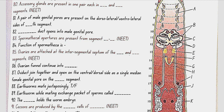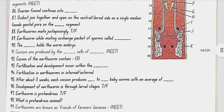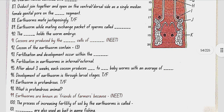Spermathecal apertures are present from segments 6 to 9. Function of spermatheca is to receive and store spermatozoa during copulation. Ovaries are attached at the intersegmental septum of the 12th and 13th segments. Ovarian funnels continue into oviducts which join together and open on the ventral side as a single median female genital pore on the 14th segment. Cocoons are produced by the gland cells of the clitellum. Cocoons contain mature sperm, egg cells and nutritive fluid. Fertilization and development occur within the cocoon.